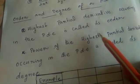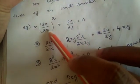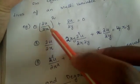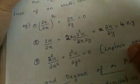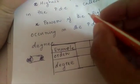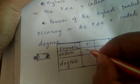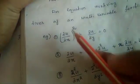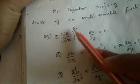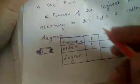For the first example, the highest partial derivatives are du/dx and du/dy, which are first-order derivatives. The highest partial derivative is first order. One term has power 2 and the other has power 1, so the highest power is 2. Therefore, the first example has order 1 and degree 2.